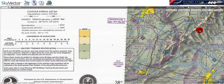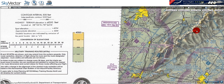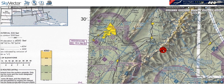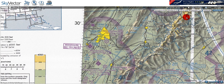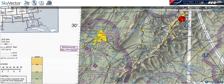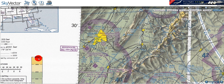If we look over here, we can see some mountainous terrain, and sure enough, the highest terrain elevation on the entire sectional — 4,050 feet — is given in this white box next to the brown, just like on the scale.